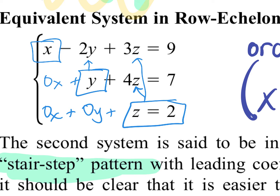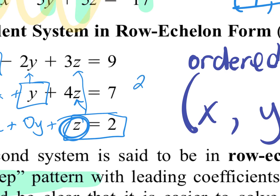When you go to solve, this variable doesn't always have to be z — it could be x or y. But it has to be positive, and the leading coefficient needs to be 1. So if there was a 2 in front of it, you would divide both sides by 2 and get z equals 1. You always want one variable by itself, positive, with 1 as the coefficient.